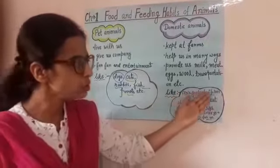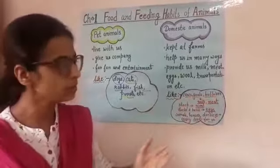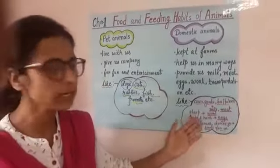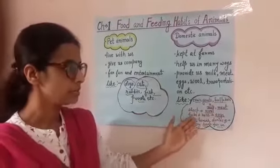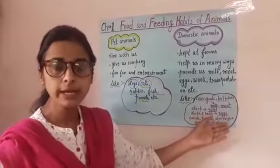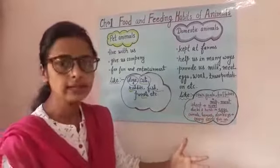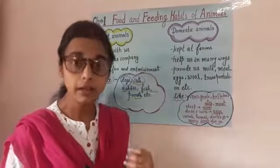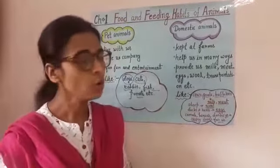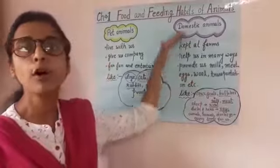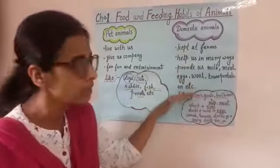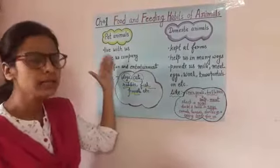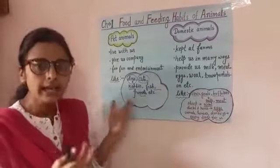From cows, goats, and buffaloes, what we expect? Milk as well as meat. From sheep, what we expect? Wool. From ducks and hens, we get eggs. We can sell the eggs or milk in the market and earn money. So we are expecting something from domestic animals, but we are not expecting anything from pet animals — they are just kept for our entertainment.